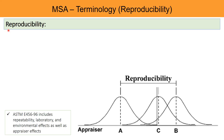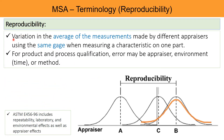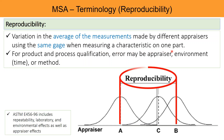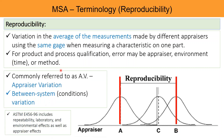Reproducibility is the variation in the average of measurements made by different appraisers or different users using the same gauge or instrument when measuring a characteristic on one part. For product and process qualification, error sources may include the appraiser, environment, time, or method. It is commonly referred to as AV — Appraiser Variation — and is also called between-system variation or between-conditions variation.